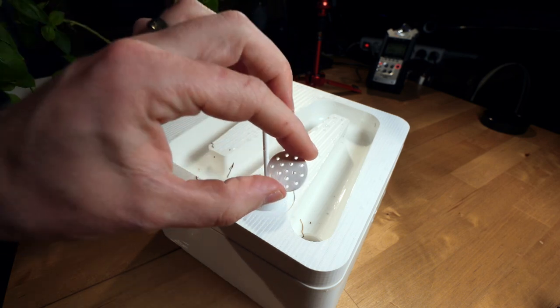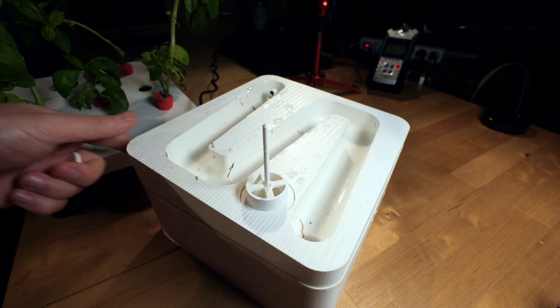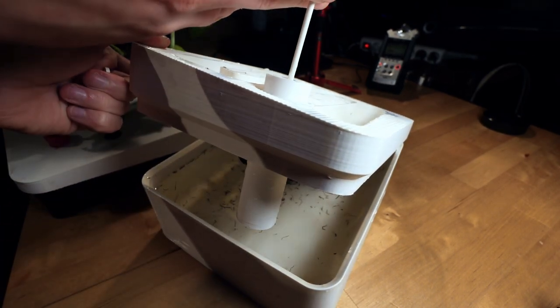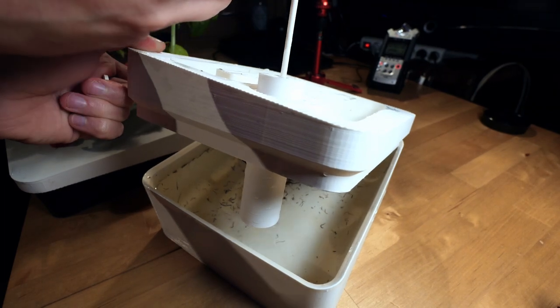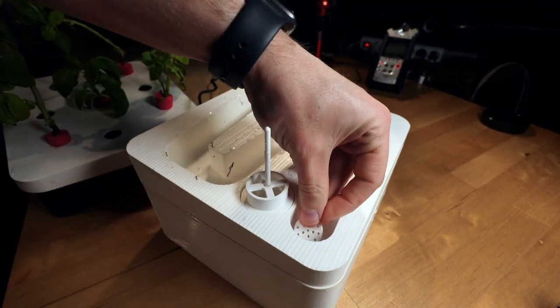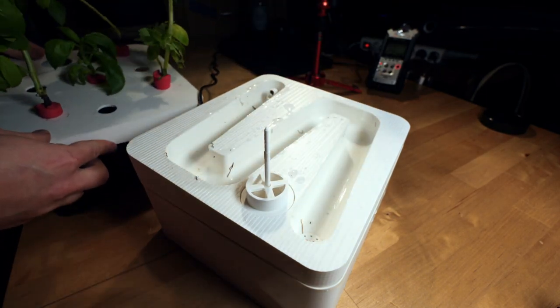I've also 3D printed a small filter that covers the draining hole. Because as you might be able to see, there's also quite a bit of bits and pieces in there, and I don't want them to clog up the pump. Fits nicely. We can put the plants back.